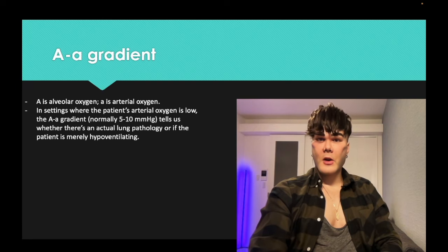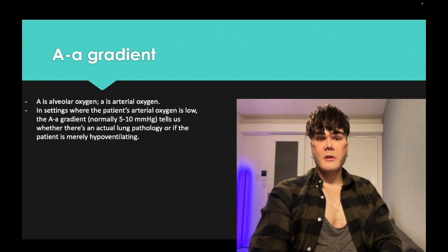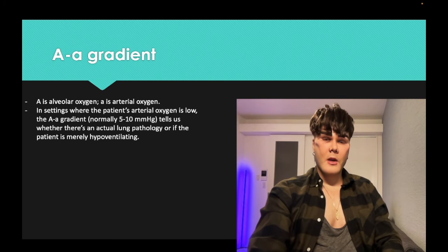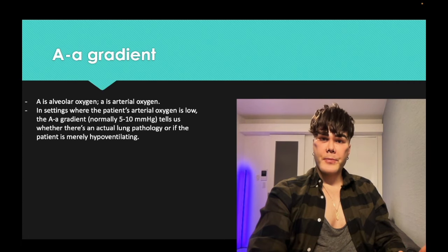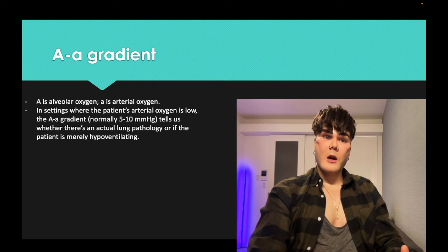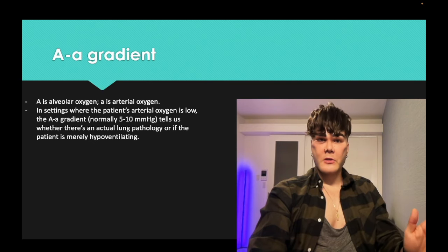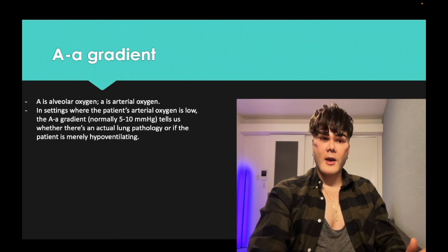AA gradient: capital A is alveolar oxygen; little a is arterial oxygen. This tells us whether respirations are sufficient. If the AA gradient is increased, it means respirations are normal but the lungs are damaged in some way — impeded gas exchange from pulmonary fibrosis, fluid in the lungs, pulmonary edema, or ARDS. The patient breathes fine, but oxygen can't cross the alveolar capillaries.